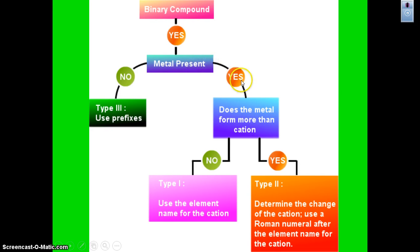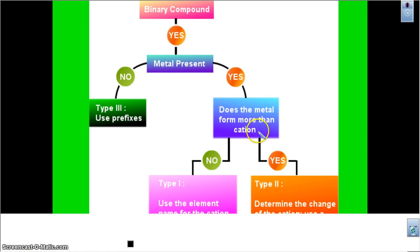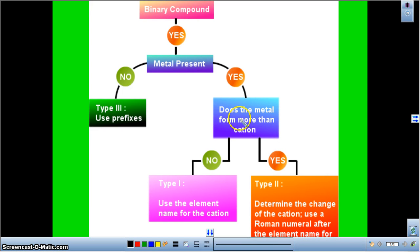If it does have a metal present, we have to ask if the metal forms more than one cation, which means is it a transition metal or is it a true metal? If it has more than one cation, these are our transition metals. And over here are our true metals. So we focused yesterday on Type 1s where we use the element name for the cation, and then we end it in ide.